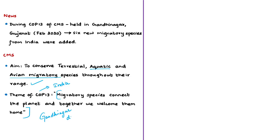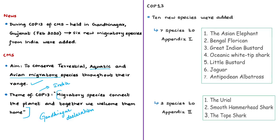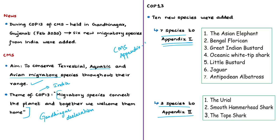As a result of this meeting, 10 new species were added to the CMS appendices: 7 species were added to Appendix 1 and 3 species were added to Appendix 2. The CMS convention, its appendices, and their meanings were already covered in the February 11th news analysis; please refer to it for better understanding.